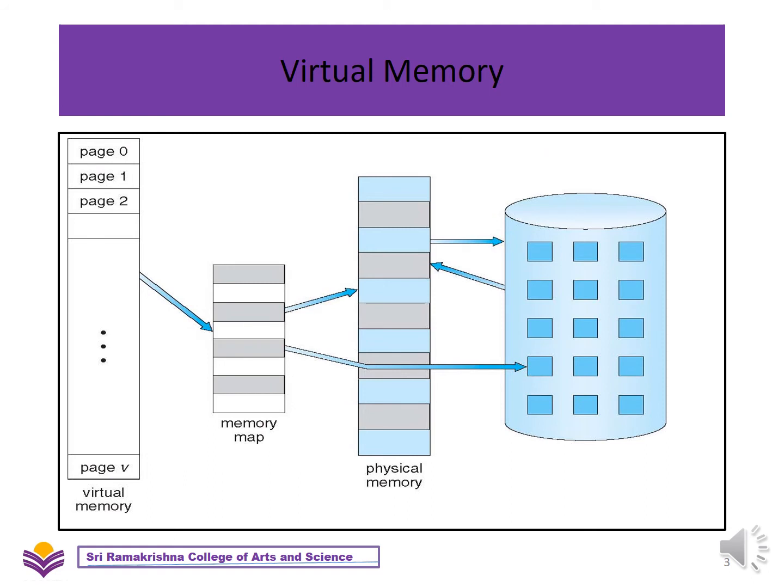This is the structure for virtual memory — where you have the virtual memory, the memory map, the physical memory, and the backing store. From the backing store, where all the pages are stored, the pages will be moved onto the physical memory for further execution.